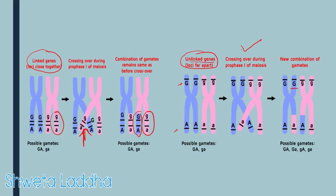The third law is accepted by unlinked genes but is not applicable to linked genes. Linked genes are those closely placed to each other with loci close to each other, while unlinked genes are located away from each other. Mendel's law of independent assortment is applicable only to unlinked genes or genes located on different chromosomes.